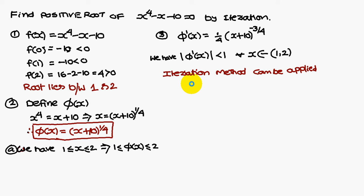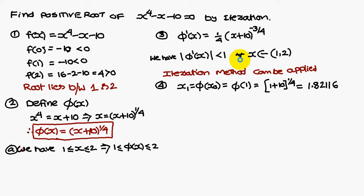The formula is x1 is equal to phi of x naught. Here, you can consider the start value as 1. So, phi of 1 — phi of x is x plus 10 whole power 1 by 4. Therefore, 1 plus 10 whole power 1 by 4, that is 1.82116. So x1 is 1.82116.